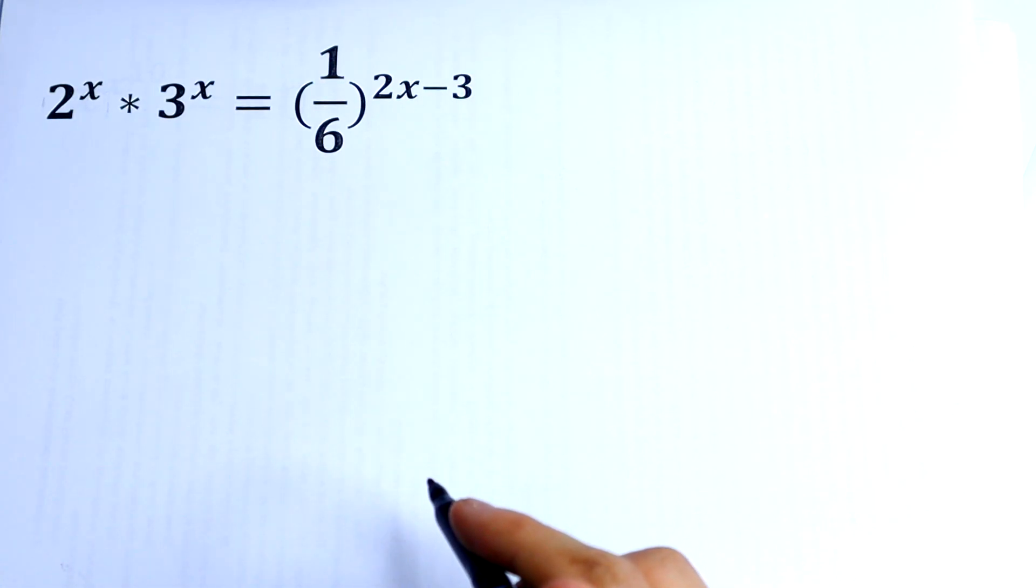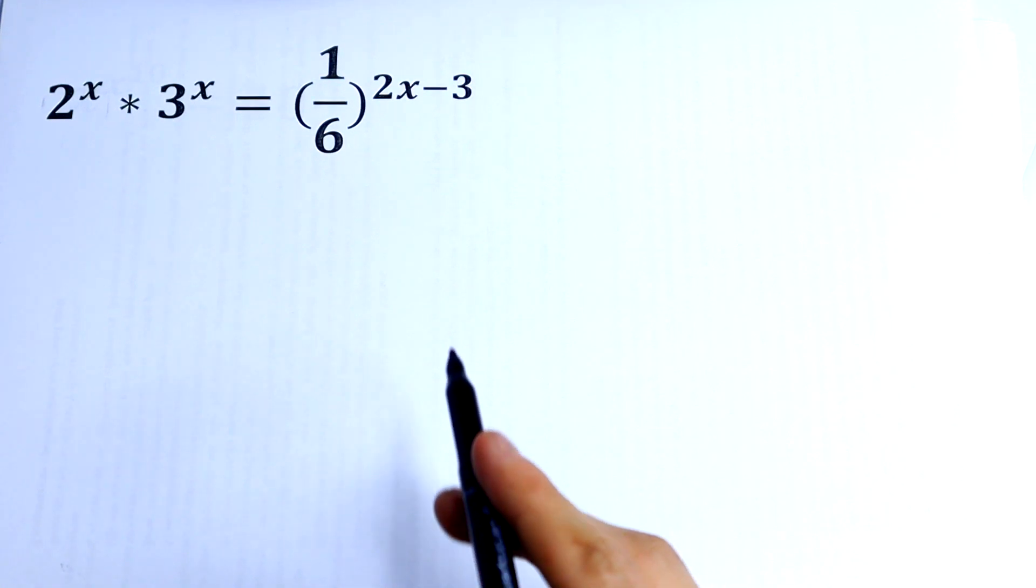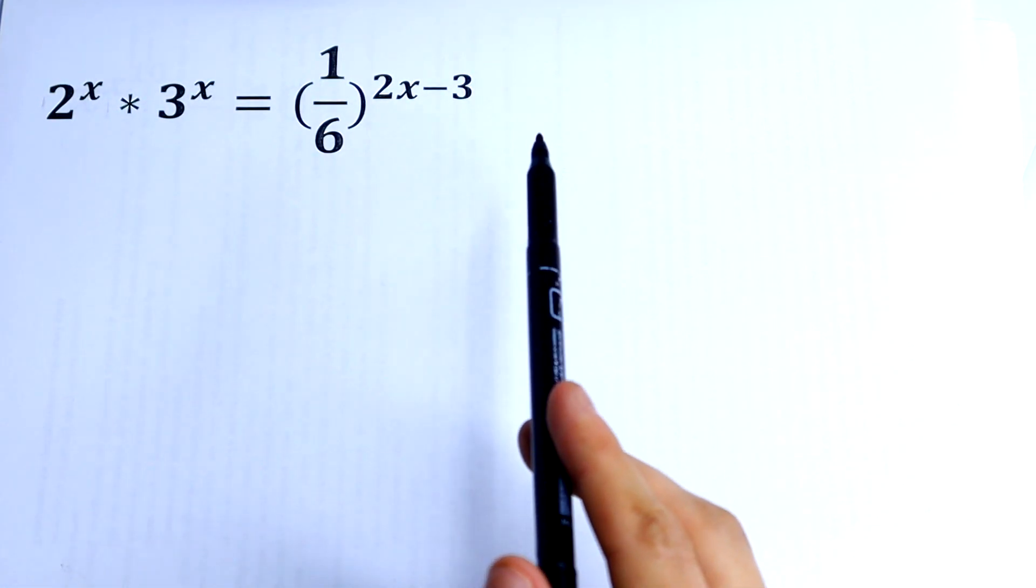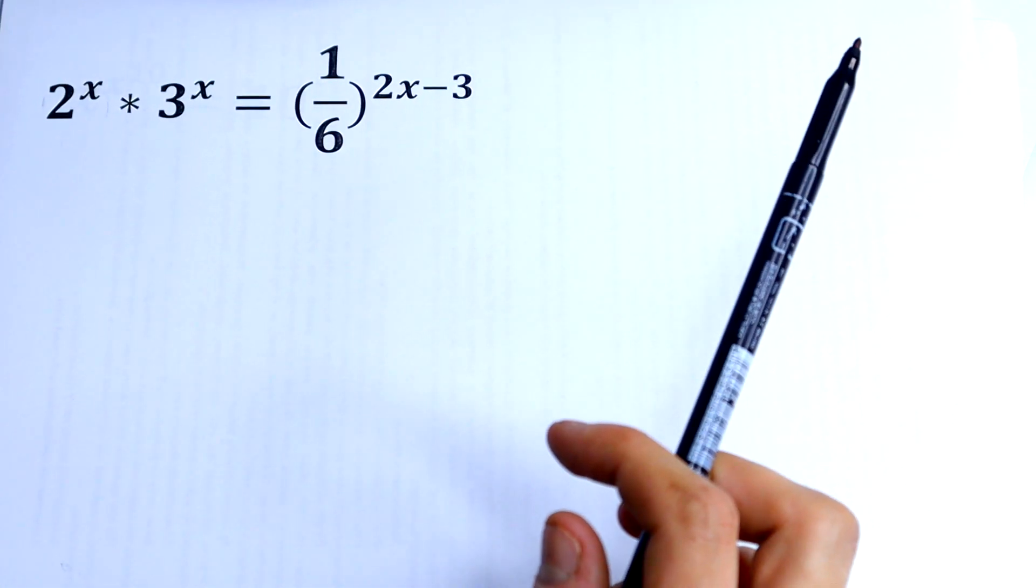Hello math lovers, welcome back to MathMood. Here we have an interesting exponential equation: 2^x times 3^x equals (1/6)^(2x-3).